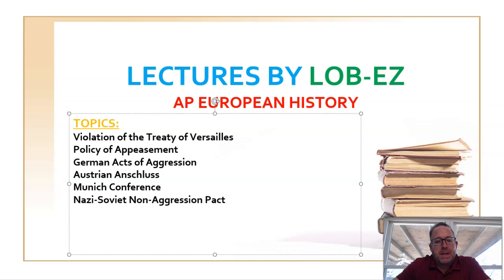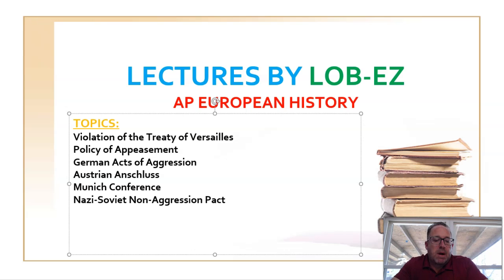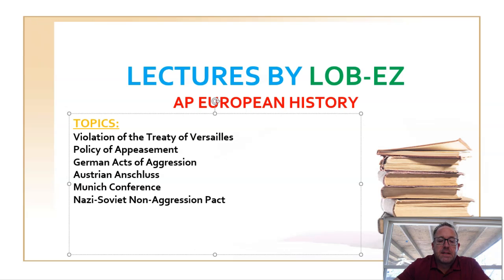Today's video will cover some of the events that contributed to the outbreak of World War II. I'm going to talk a lot about Hitler, starting with his violations of the Treaty of Versailles. We'll look at the allied response — the policy of appeasement — and then some German acts of aggression, primarily the Austrian Anschluss, the events surrounding the Munich Conference and the Sudetenland, and finally the Nazi-Soviet Non-Aggression Pact prior to the invasion of Poland.